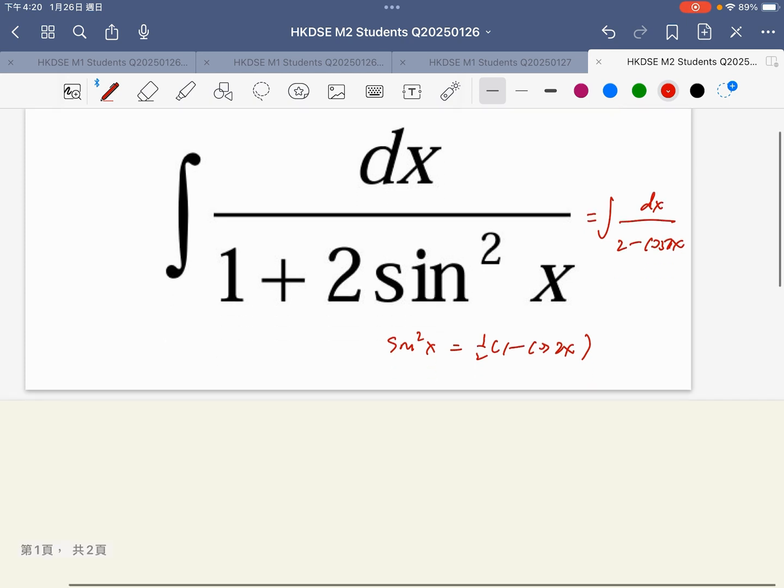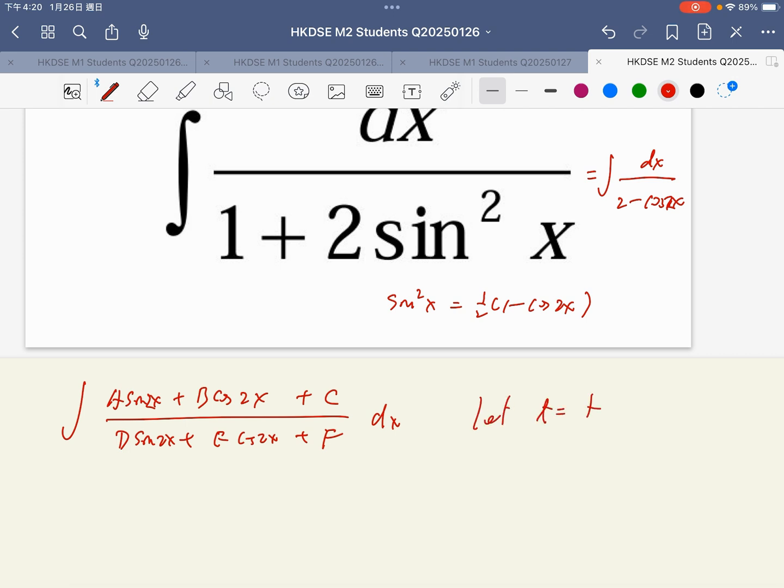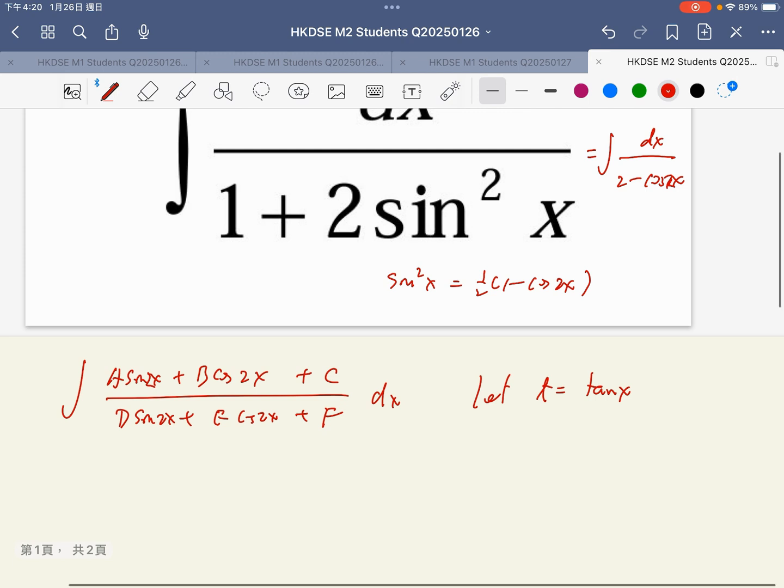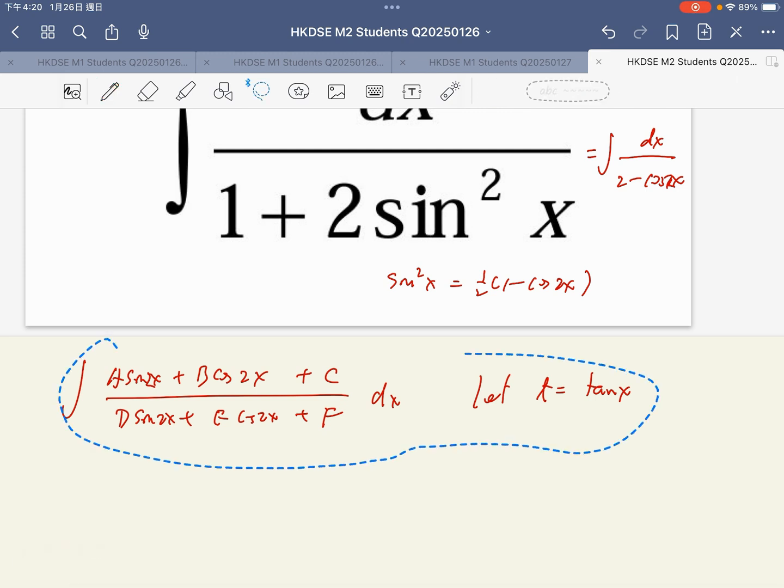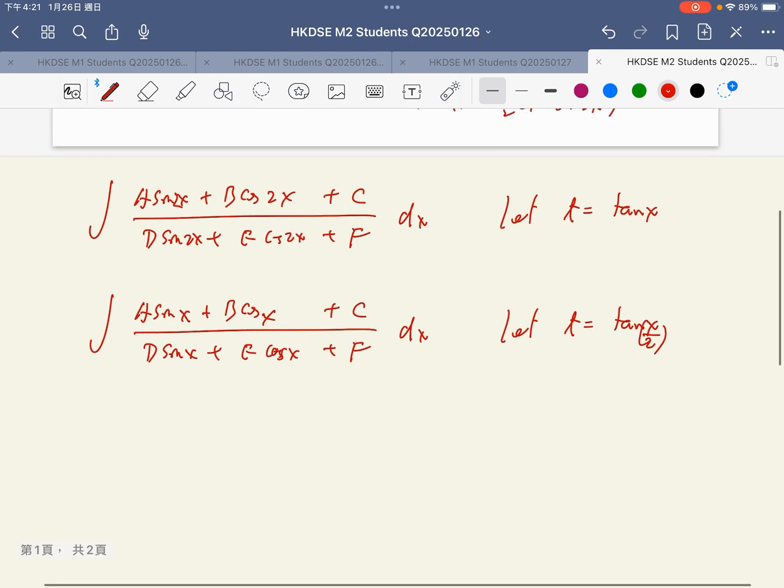Because when you have that format, a sine x plus b cos 2x plus c, for the denominator is d sine 2x plus e cosine 2x plus f dx, in this case you can let t equal to tangent x. If the format is x here, then you let t equal to tangent x over 2. This is actually the so-called t formula.